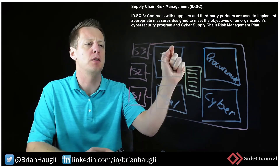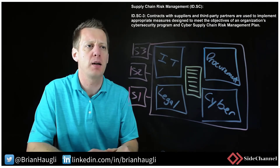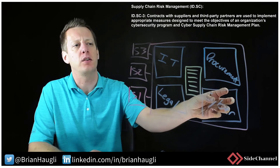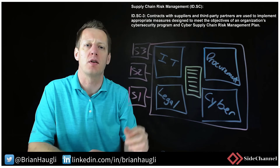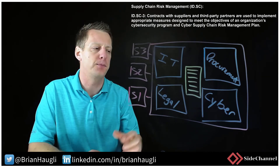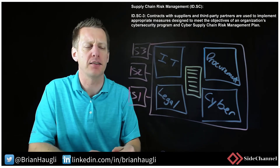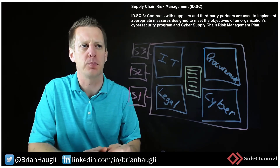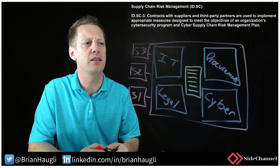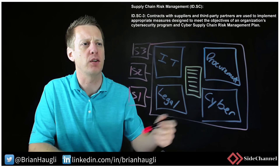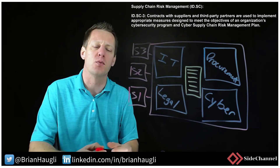Work with these teams to figure out what needs to go into contracts — whether you do this at renewal, at inception, or on an ongoing basis. Cybersecurity needs to start seeing its needs implemented into this traditional aspect of the organization, and it needs to be better managed. ID.SC-3: contracts with suppliers and third-party providers are used to implement appropriate measures designed to meet the objectives of the organization's cybersecurity program and ideally a cyber supply chain risk management plan.